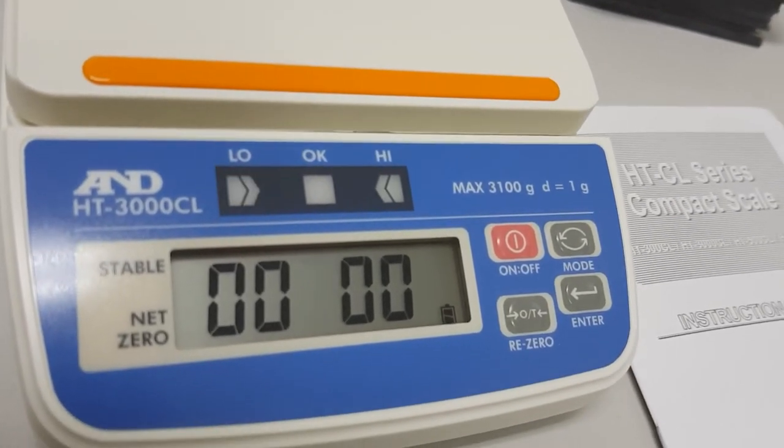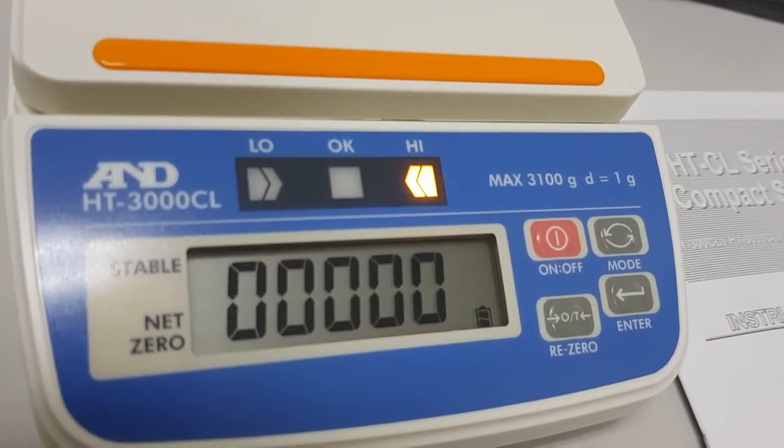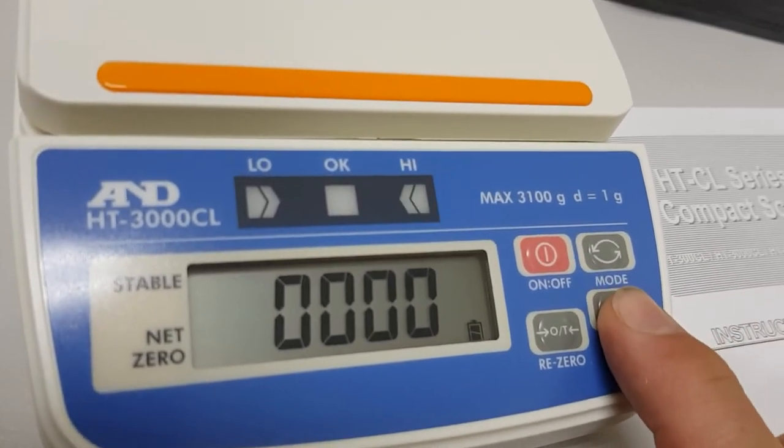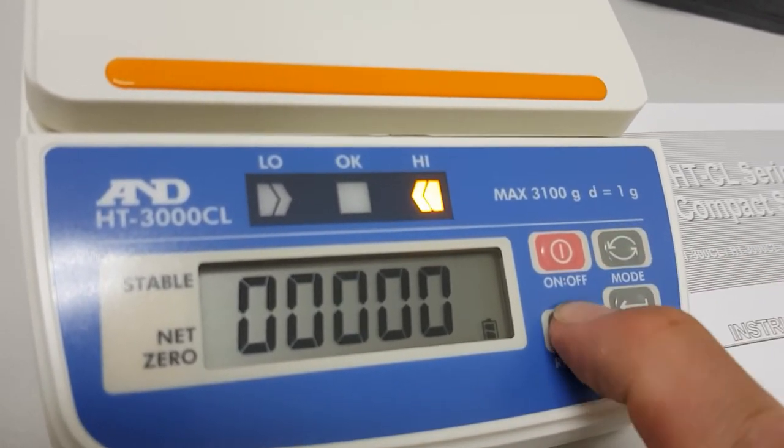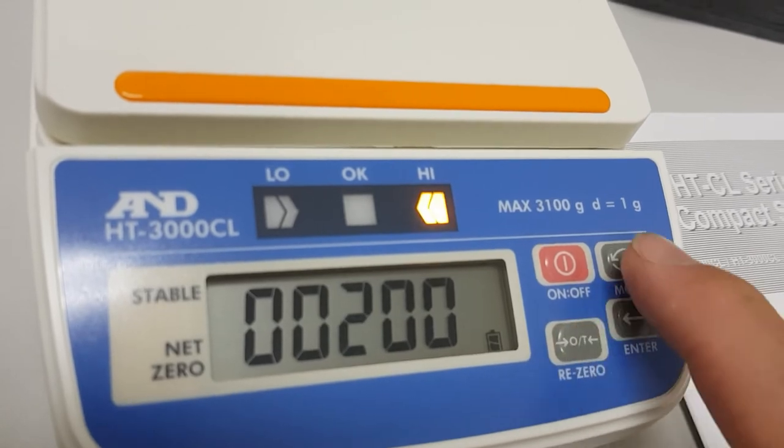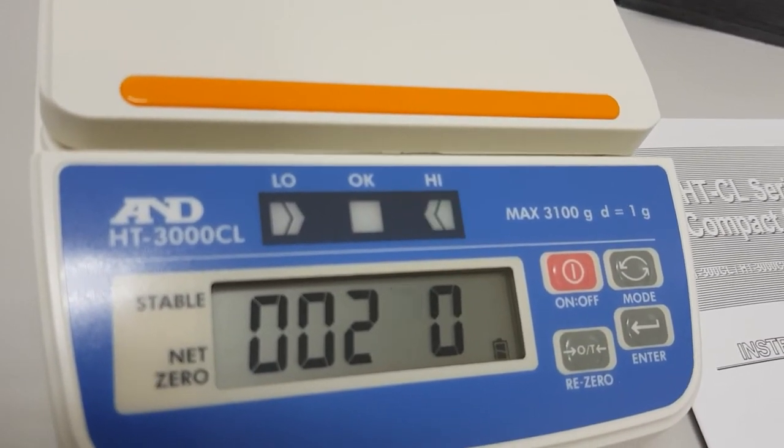Hit enter and now it'll ask us to set the high value. Again same screen, press enter to make one flash, use the mode key to go across. We're going to change this one by pressing the zero to two, go across one more, press that again. That's now 220 grams as my high limit.